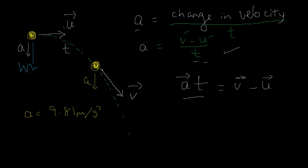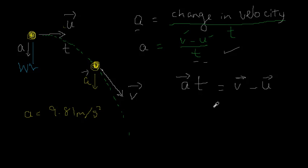What does each side of this mean? A times T: A is a vector pointing downwards, and T is just a number — a scalar. So A times T means a vector multiplied by a number, which scales the length of the vector. The result of A times T is still a vector pointing in the same direction as A, but with its length multiplied by T. So AT is a vector pointing downwards.